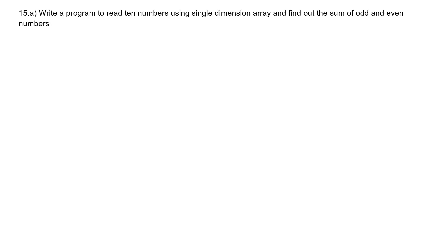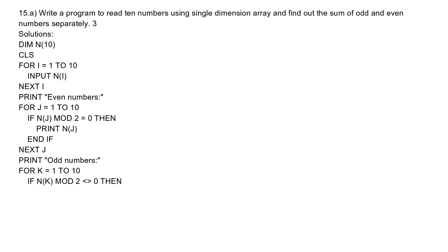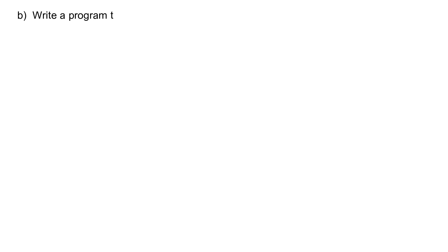Question 15. A. Write a program to read 10 numbers using a single dimension array and find the sum of odd and even numbers separately. Solution: DIM N(10): CLS: FOR I = 1 TO 10: INPUT N(I): NEXT I. PRINT "Even numbers": FOR J = 1 TO 10: IF N(J) MOD 2 = 0 THEN PRINT N(J): END IF: NEXT J. PRINT "Odd numbers": FOR K = 1 TO 10: IF N(K) MOD 2 <> 0 THEN PRINT N(K): END IF: NEXT K: END.